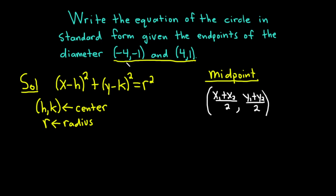So you could call the first ordered pair x₁, y₁, and the second ordered pair x₂, y₂, and then you can apply the formula. So it would be (-4 + 4)/2, and then you add the y's and divide by 2, so (-1 + 1)/2.